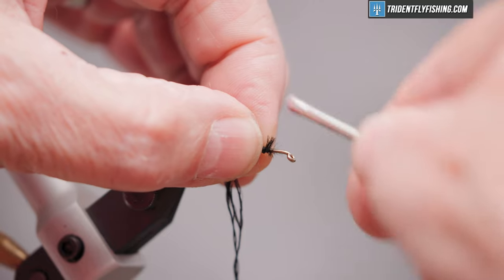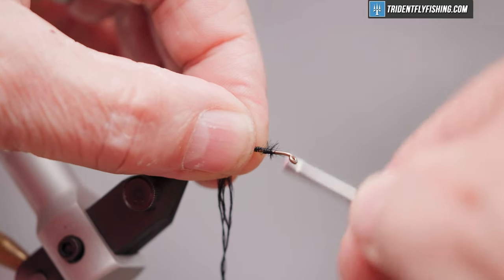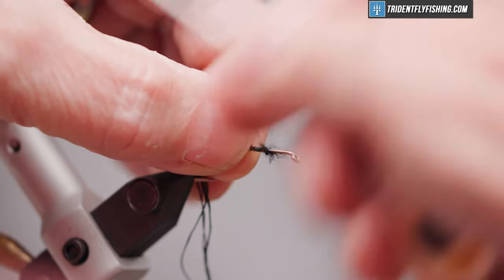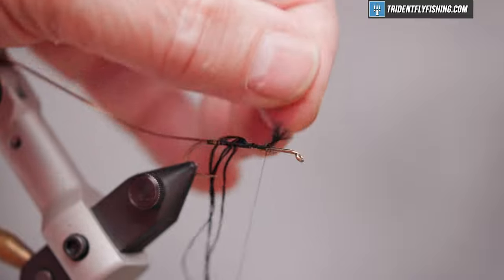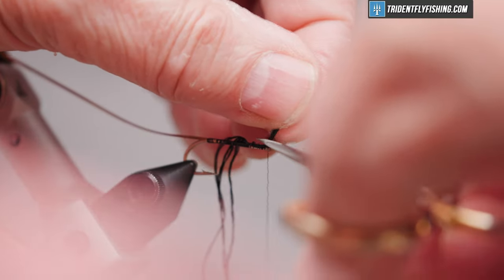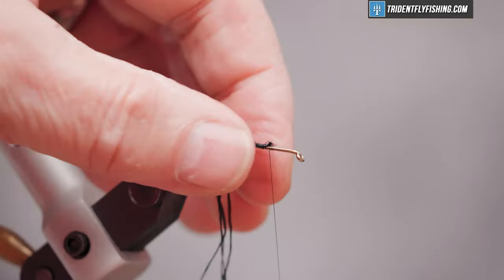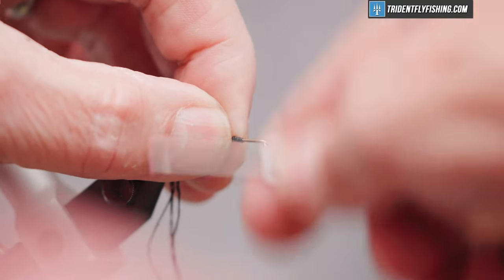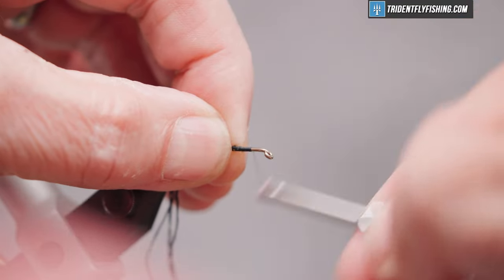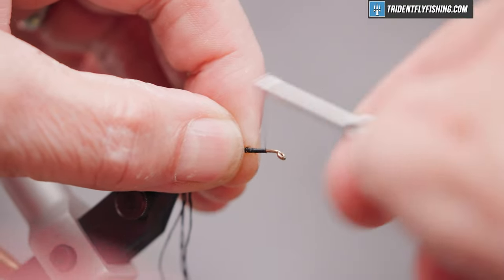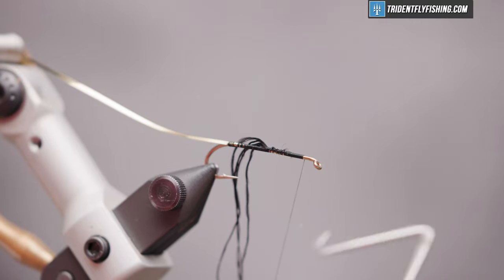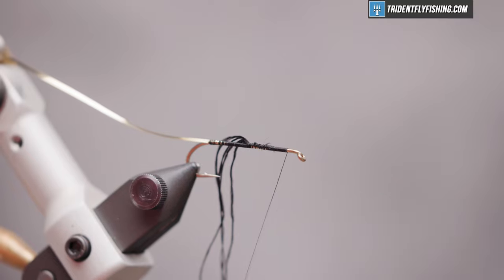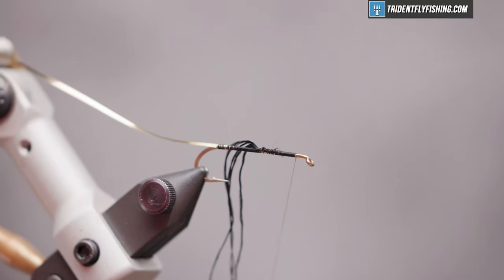Probably could have left that longer, would have made it easier. I don't like that, it's all lumpy. I'll cut off that excess right there. Now run my thread forward about an eye length and a half behind the hook eye. We're going to stop and save our work with a quick whip finish. We're going to use the rotary function of the vice to form the body.